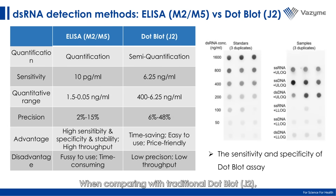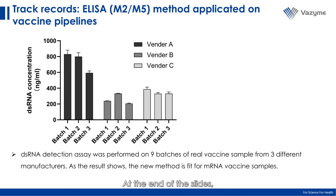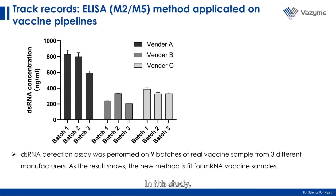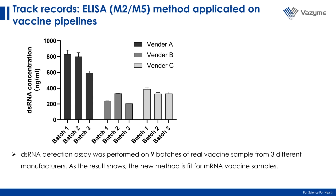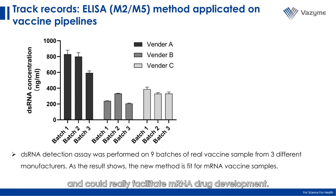When comparing with the traditional dot blot, our approach takes advantages in specificity, sensitivity, and high throughput. At the end of the presentation, I am excited to share positive feedback from our collaborators. In this study, the ELISA kit was applied to nine batches of samples from three different manufacturers. The results demonstrated excellent consistency across batches, confirming our new method is a great match for real mRNA vaccine samples and could really facilitate mRNA drug development.